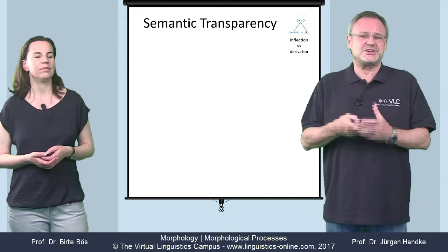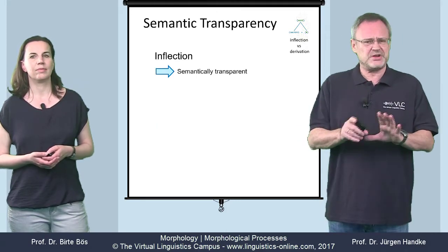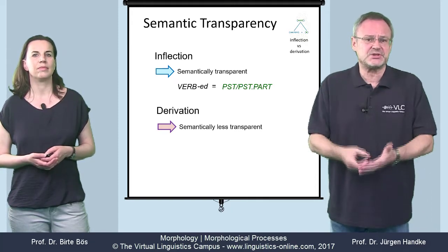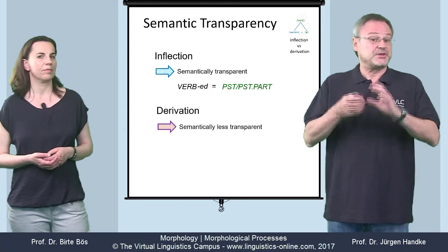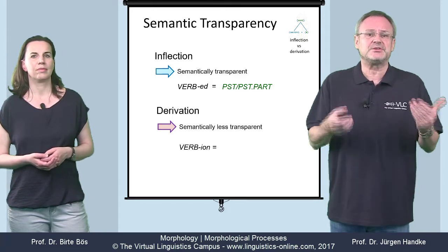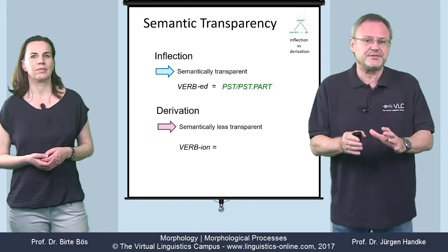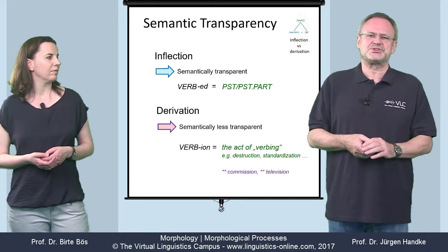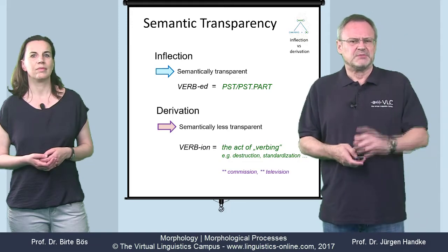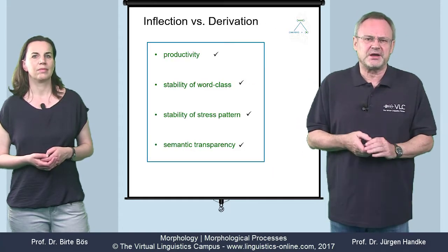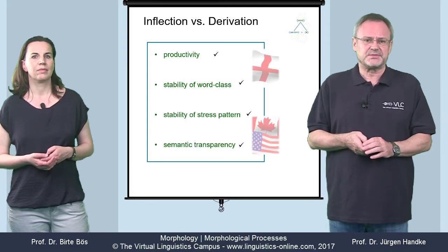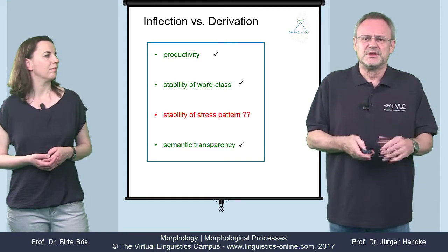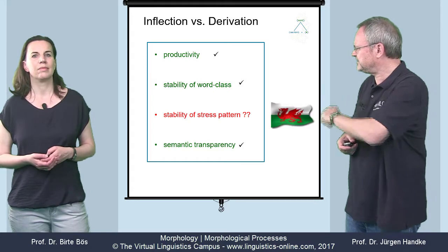Furthermore, inflection is semantically transparent across the board, but derivation is not. If you add "-ed" to a verb, the result is either past or past participle. Derivatives generated, for example, by the addition of -ion, however, denote different things. In many cases, -ion means 'the act of', but not in examples such as commission or television. But note: all these criteria are primarily based on present-day English.